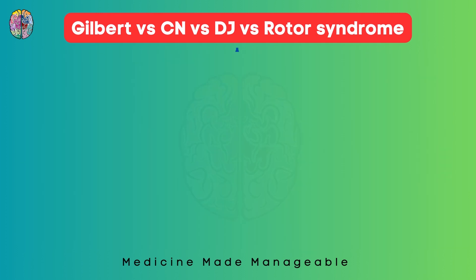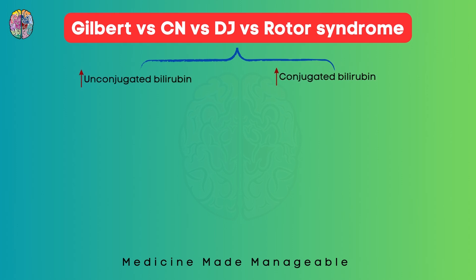Now let's build a diagnostic flowchart to help solve questions. Whenever approaching a question, first determine what is increased — unconjugated or conjugated bilirubin. If unconjugated bilirubin is increased, think Gilbert syndrome or Crigler-Najjar syndrome. If conjugated bilirubin is increased, think Rotor syndrome or Dubin-Johnson syndrome.